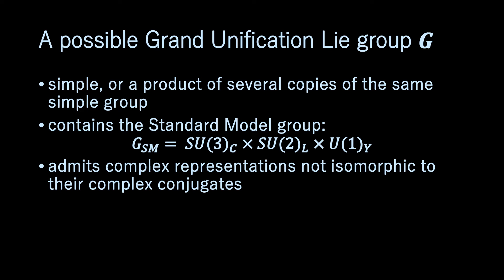We call a Lie group G a possible grand unification group if it has the following properties. G is simple, so that it has only one coupling constant, or G is a product of several copies of the same simple group, where the coupling constant for each factor is set the same. The Lie group G contains the standard model group SU(3) × SU(2) × U(1), and G admits complex representations not isomorphic to their complex conjugates.